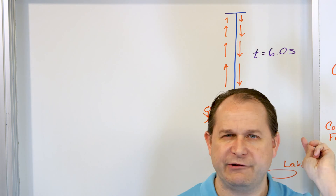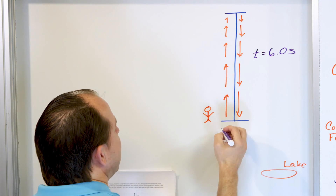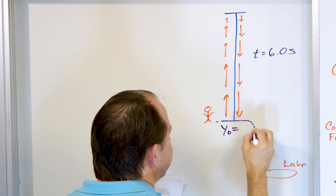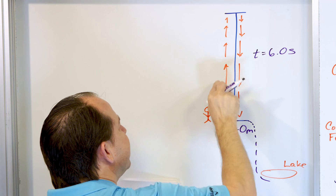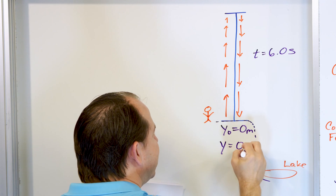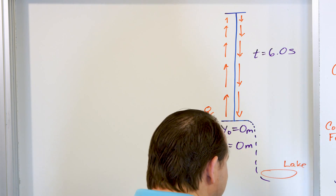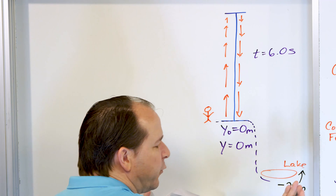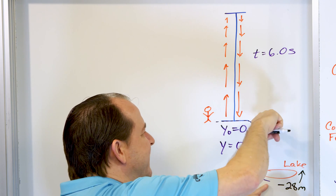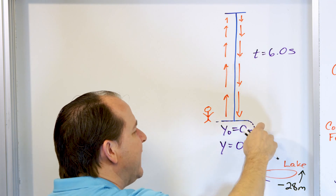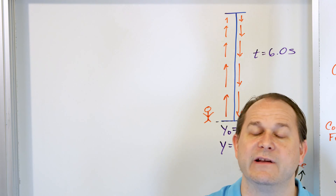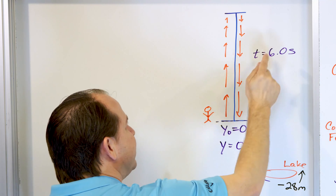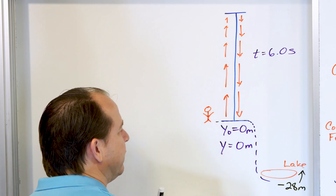What do we know about this? This journey up and back down takes 6.0 seconds. Now it doesn't tell us the start and end positions explicitly, but you have freedom. Define the initial position — the cliff face — as zero meters. When the rock gets back down to that initial position again, the final position is also zero meters because we're back where we started. Then later, I'm going to say the lake has a position of negative 28 meters — that's relative to my zero point, meaning 28 meters below my position. But for right now, the rock starts and lands at the exact same position: zero meters.